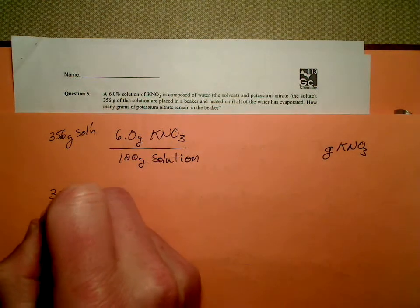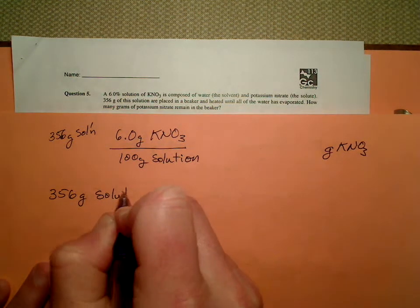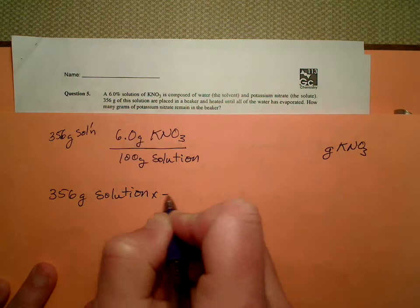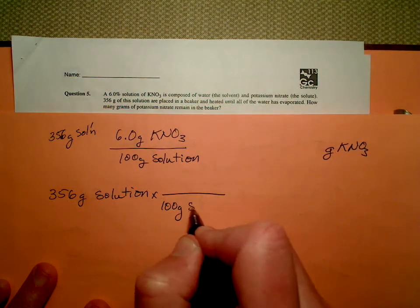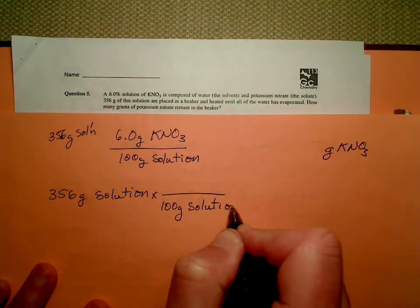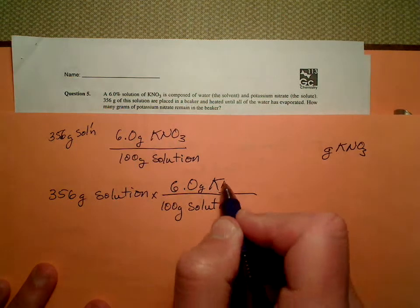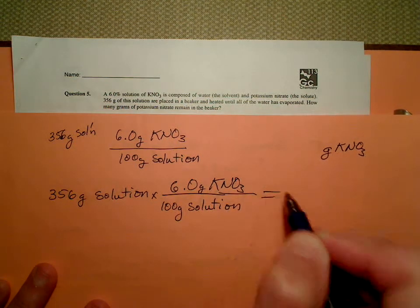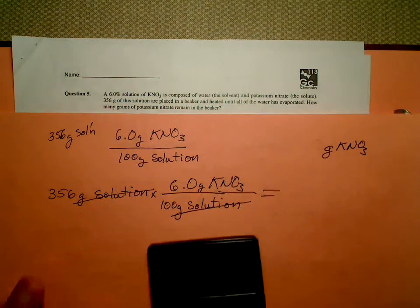So if we start with 356 grams of solution, this is a one-stepper. 100 grams of solution contains 6.0 grams of potassium nitrate. Grams of solution cancel, leaving us with grams of potassium nitrate.